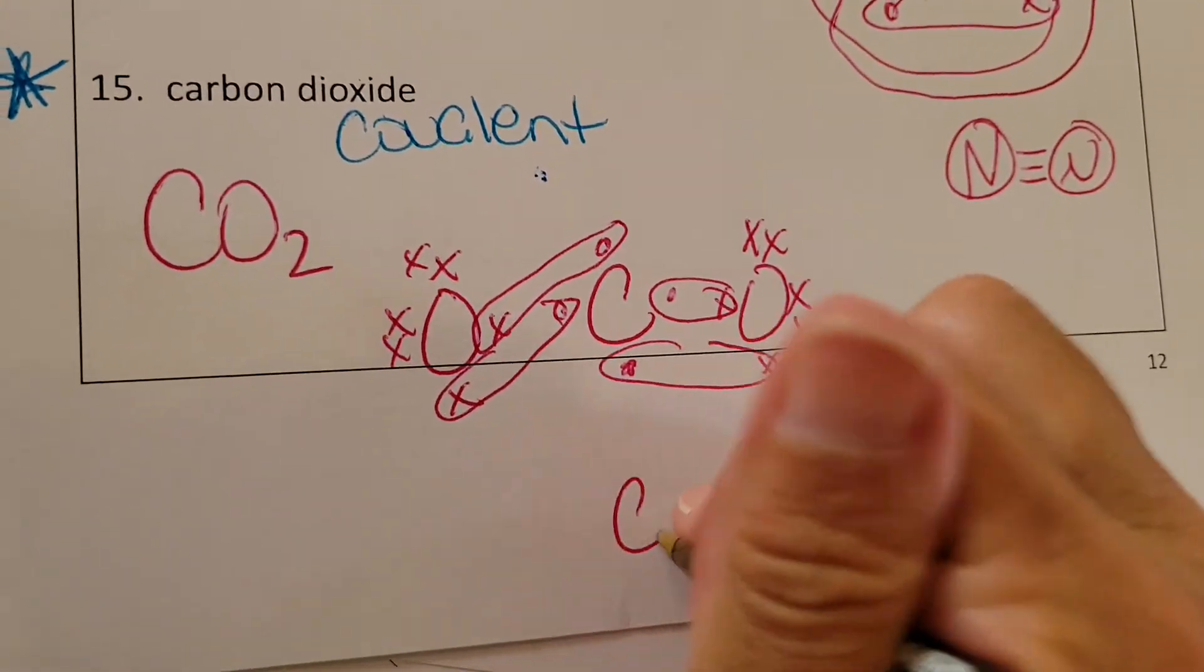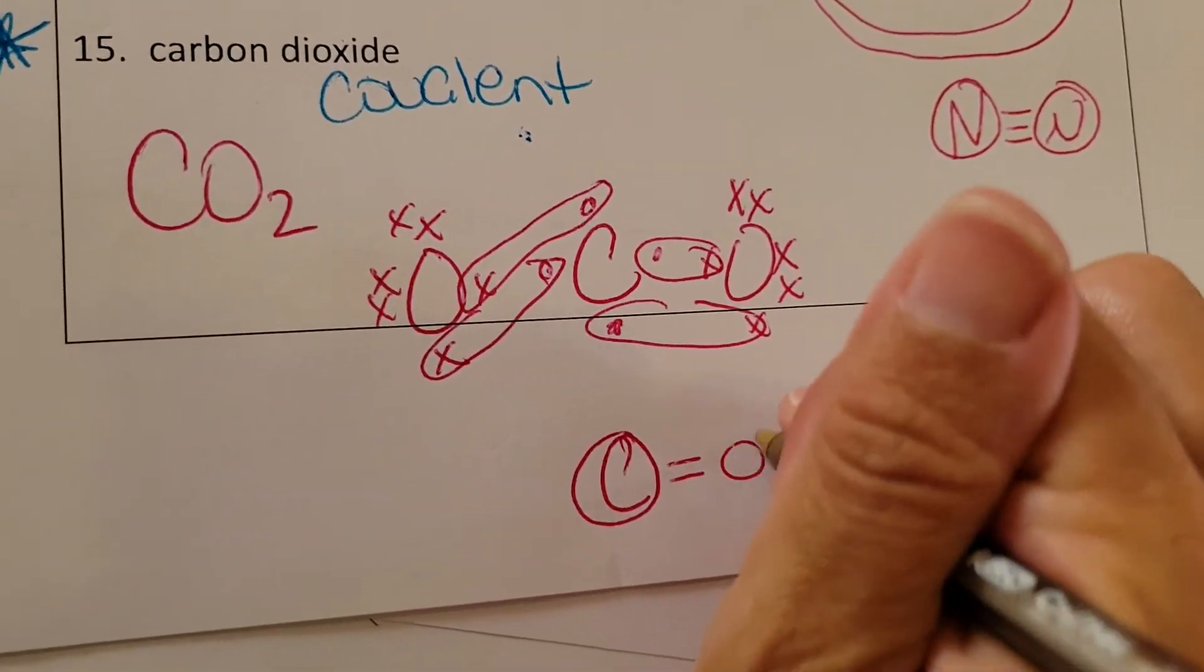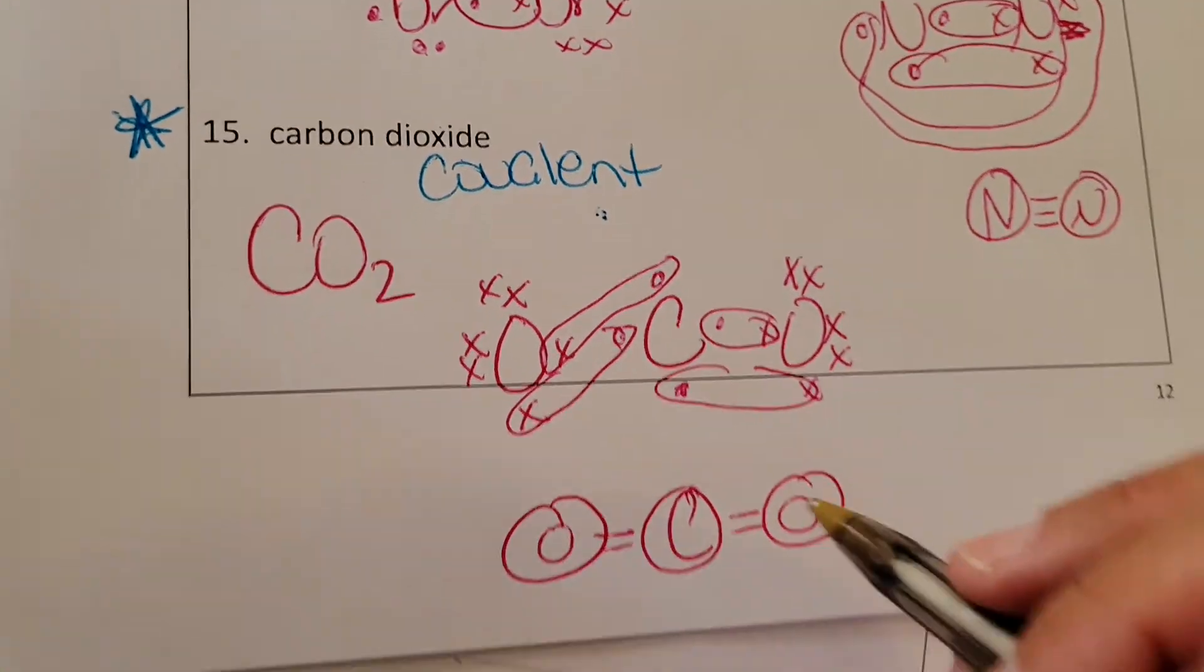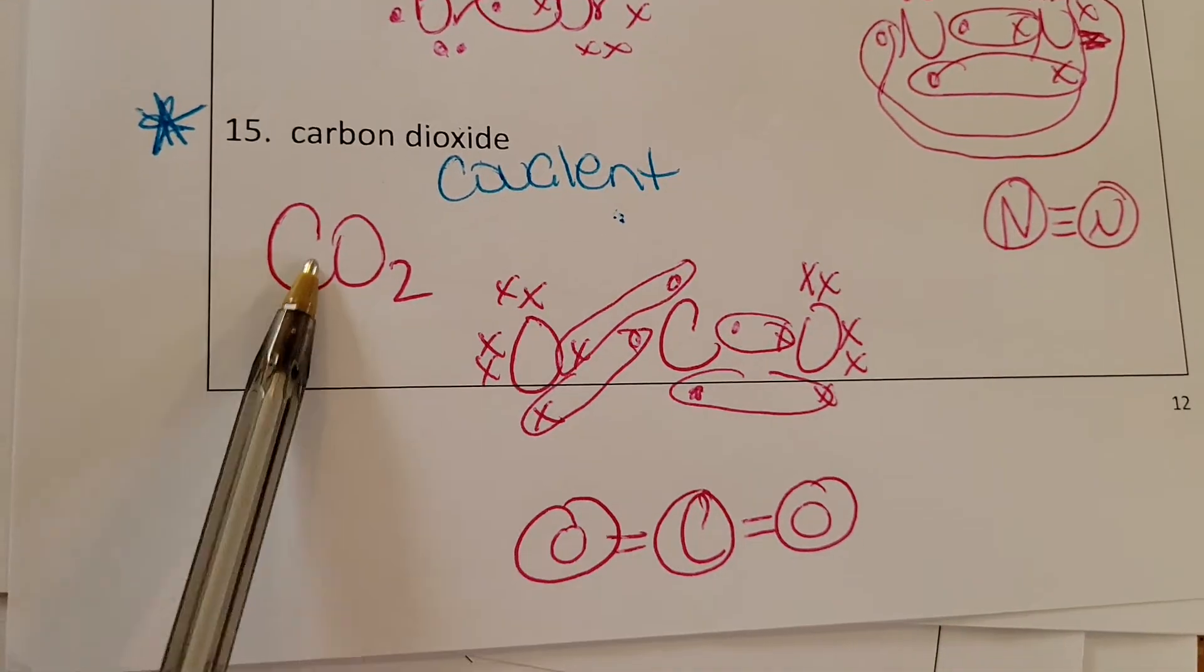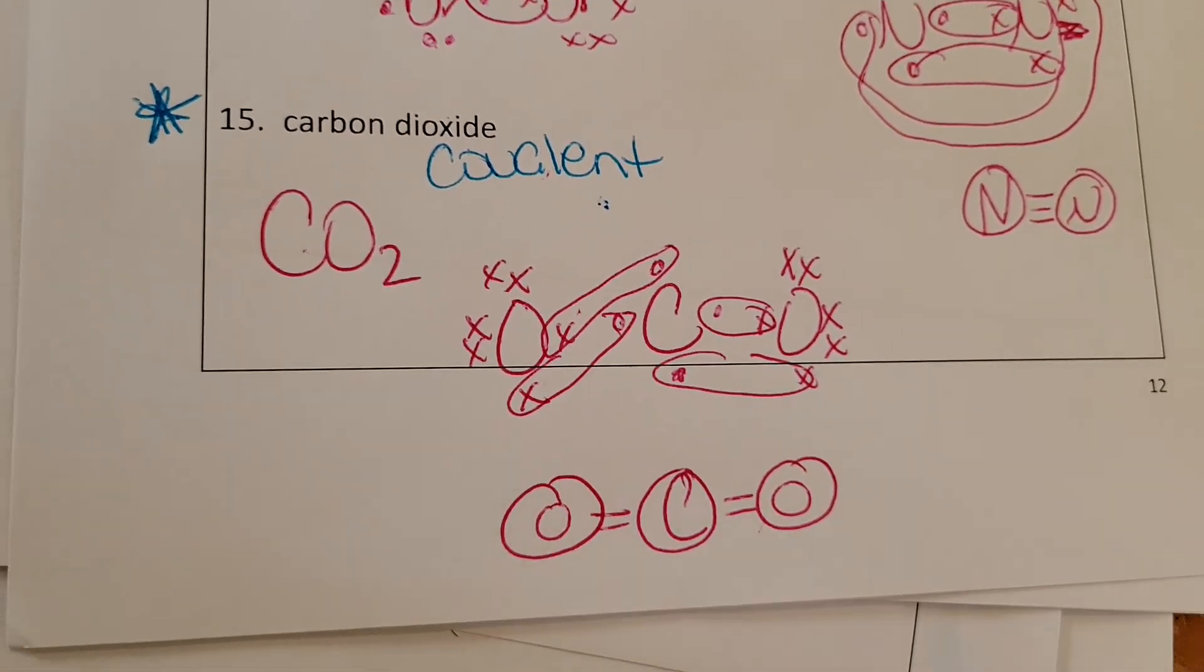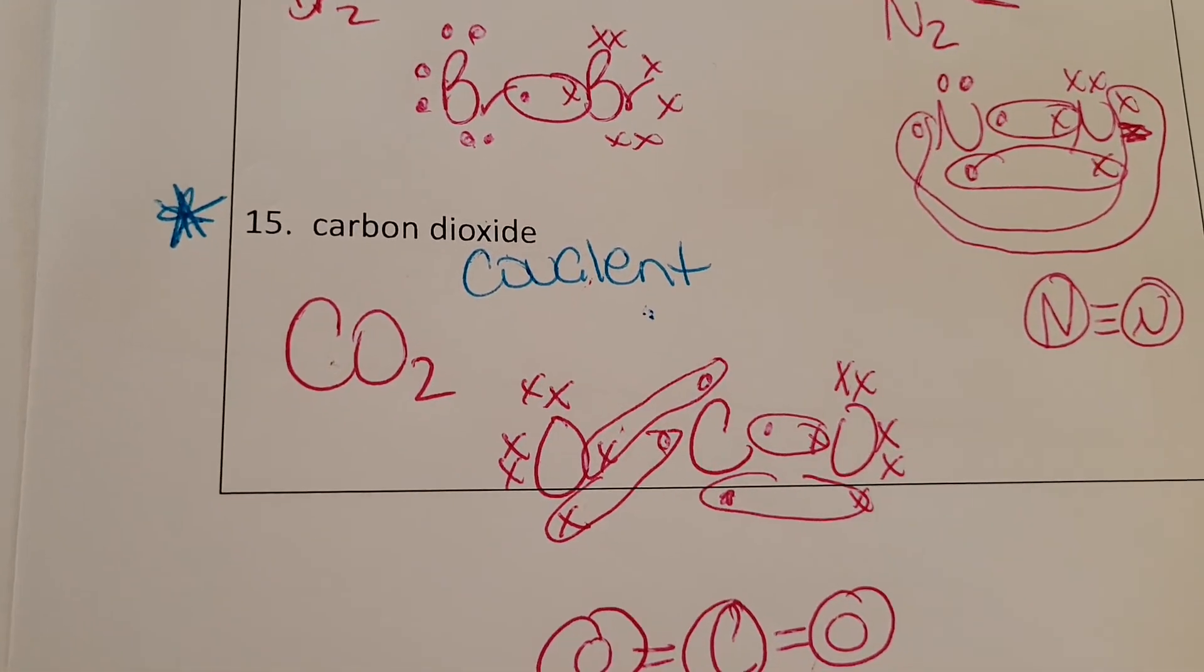So if we share and share and share and share, we end up with carbon with a double bond to one oxygen and to the other oxygen. So this one was kind of a little bit of a trick. It was putting together the covalent part that we had done the day before with the idea that you can have multiple bonds.